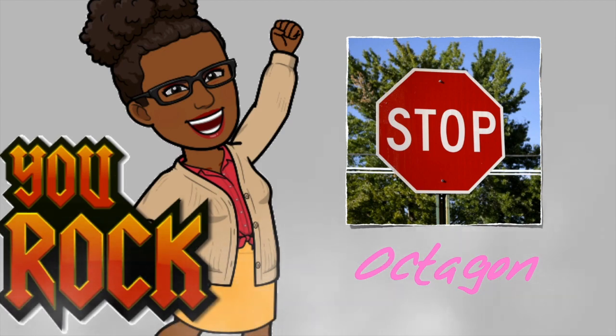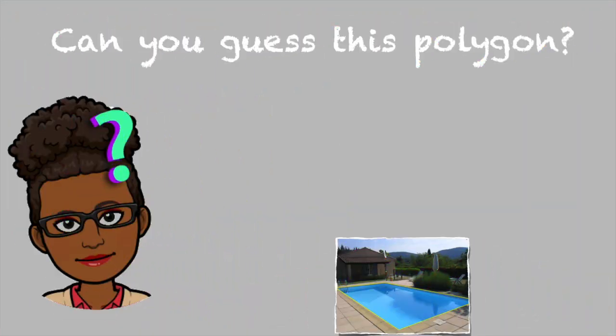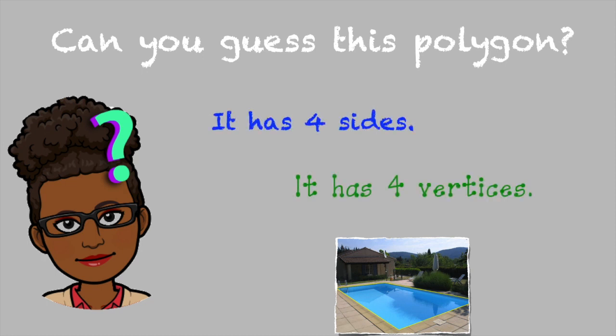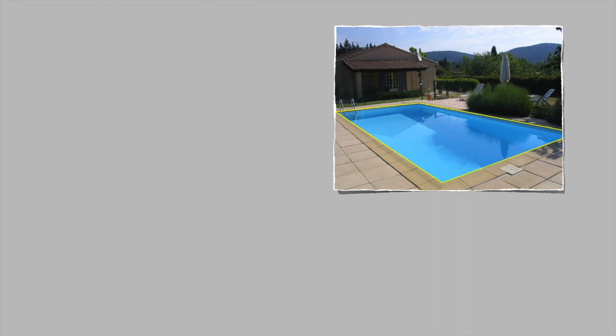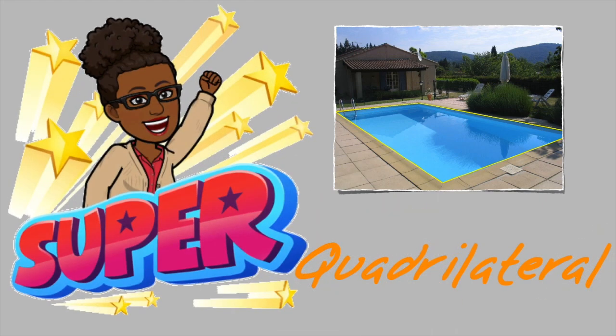Can you guess this polygon? It has four sides, four vertices, and I'm sure you know what that cool water looks like. Well, if you said quadrilateral, super job guys.